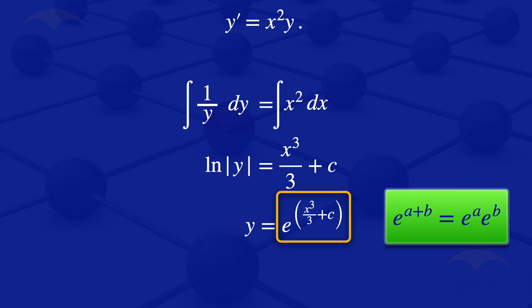So when you use that law, our equation becomes exponent of X cubed over 3 multiplied by exponent of C, exponent of that constant of integration.